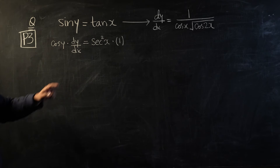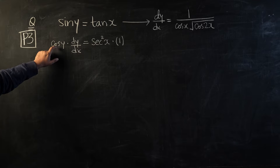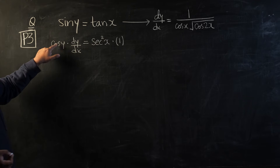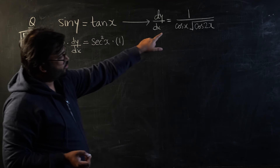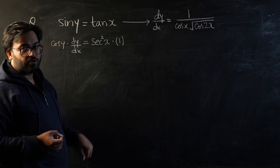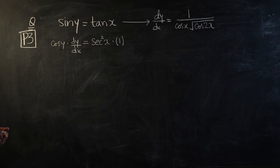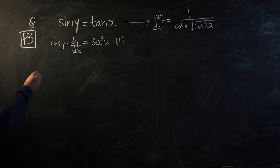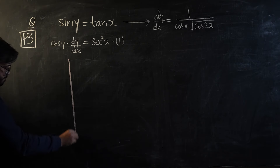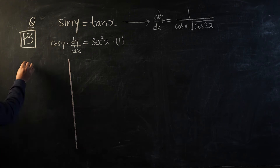Now let's see how we are going to maneuver from this form to the required form. This cos y is going to create a problem because we do not have any term in terms of y in the target expression. So let's create a tactic that will help us — if I write sine y...